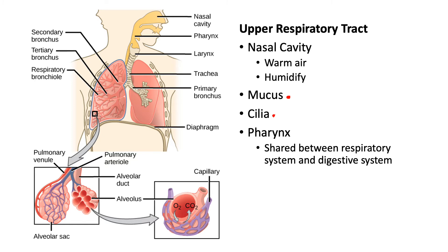We see the nasal cavity here and the mouth here. Air comes in and the next feature is the pharynx. The pharynx is important — that's sort of the opening at the back of the mouth and the nasal cavity. This is shared between the respiratory system and the digestive system, and we're going to talk more about where this branches off between these two systems.